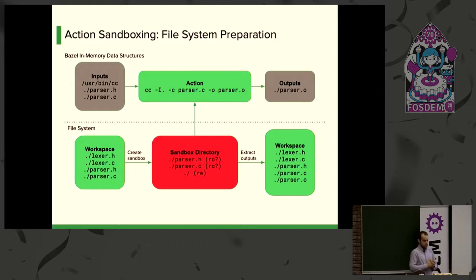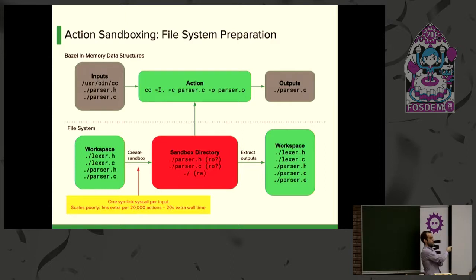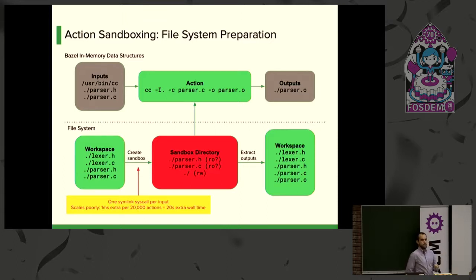The problem is that the sandbox directory today is created with symlinks — all those intermediate entries are symlinks pointing back to the workspace. We would like those files to be read-only, but with symlinks we cannot do that. More importantly, the performance issue is that in big builds, actions tend to have thousands of inputs, so creating the sandbox for every action becomes extremely costly. We have to do one system call per input, and since actions are on the critical path, any increase in performance has a big impact on overall build time.